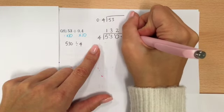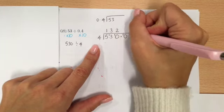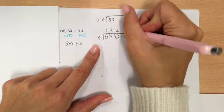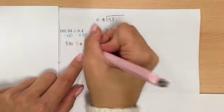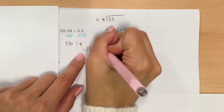So, to carry this on, I would put in a decimal and a 0 and carry on. And then 4 into 20 goes 5 times with no remainders. So, my answer is going to be 132.5.